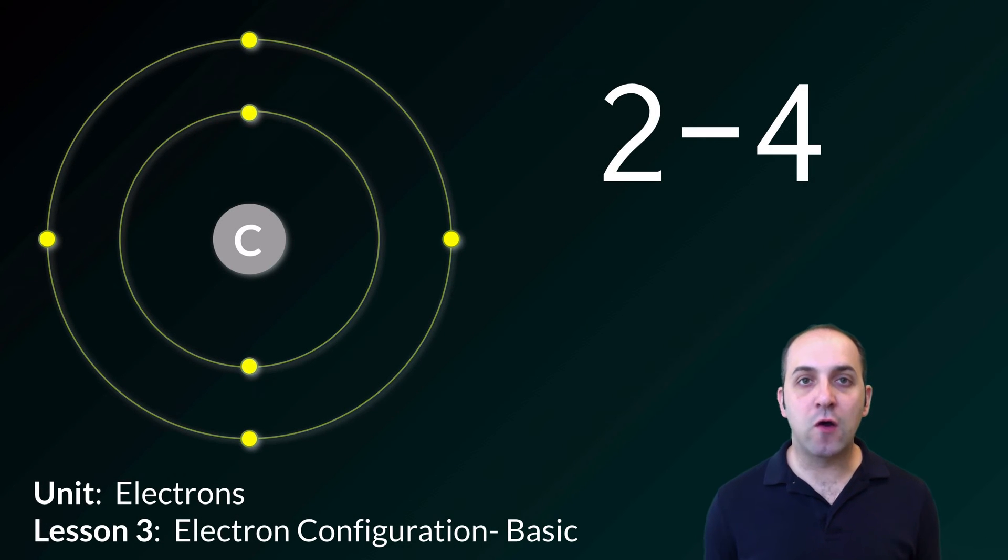Hi and welcome to lesson three here in our electrons unit. For the next couple of lessons we're going to talk about electron configurations and how we represent the configuration of electrons in particular atoms. We're going to look at a couple of different ways to do this.